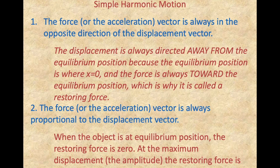When the mass is at its amplitude — the maximum displacement from equilibrium — the acceleration and force are also at a maximum, because it is furthest from equilibrium and the restoring force is strongest. To recap, there are two conditions to define simple harmonic motion: the force is always in the opposite direction of the displacement, and the force is always proportional to the displacement.